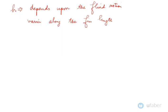At the wall, the fluid motion is restricted due to some geometrical features, so the value of h is low at the fin base. At the fin tip, the fluid motion is much more free, so the value of h at the fin tip is higher compared to the value of h at the fin base.